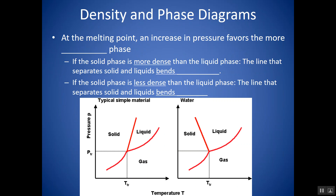At the melting point, an increase in pressure favors the more dense phase. On the graph, if you go anywhere on the solid-liquid interface line and increase the pressure — meaning go up on the y-axis — what phase do you turn into? Here you would turn into solid. If increasing pressure produces solid, that means solid is more dense than liquid. An increase in pressure favors the more dense phase. So whenever the solid-liquid line bends to the right, the solid phase is more dense.